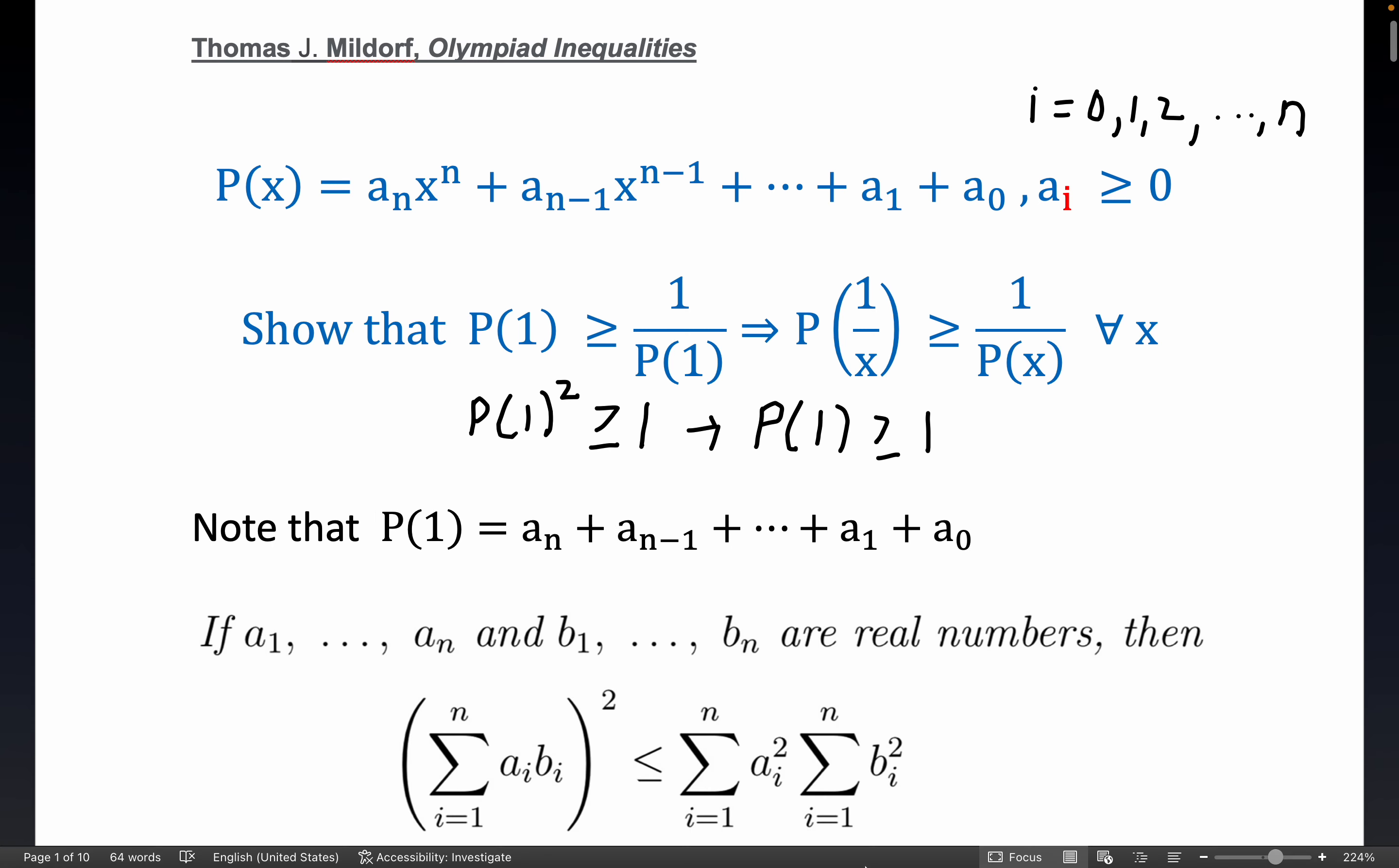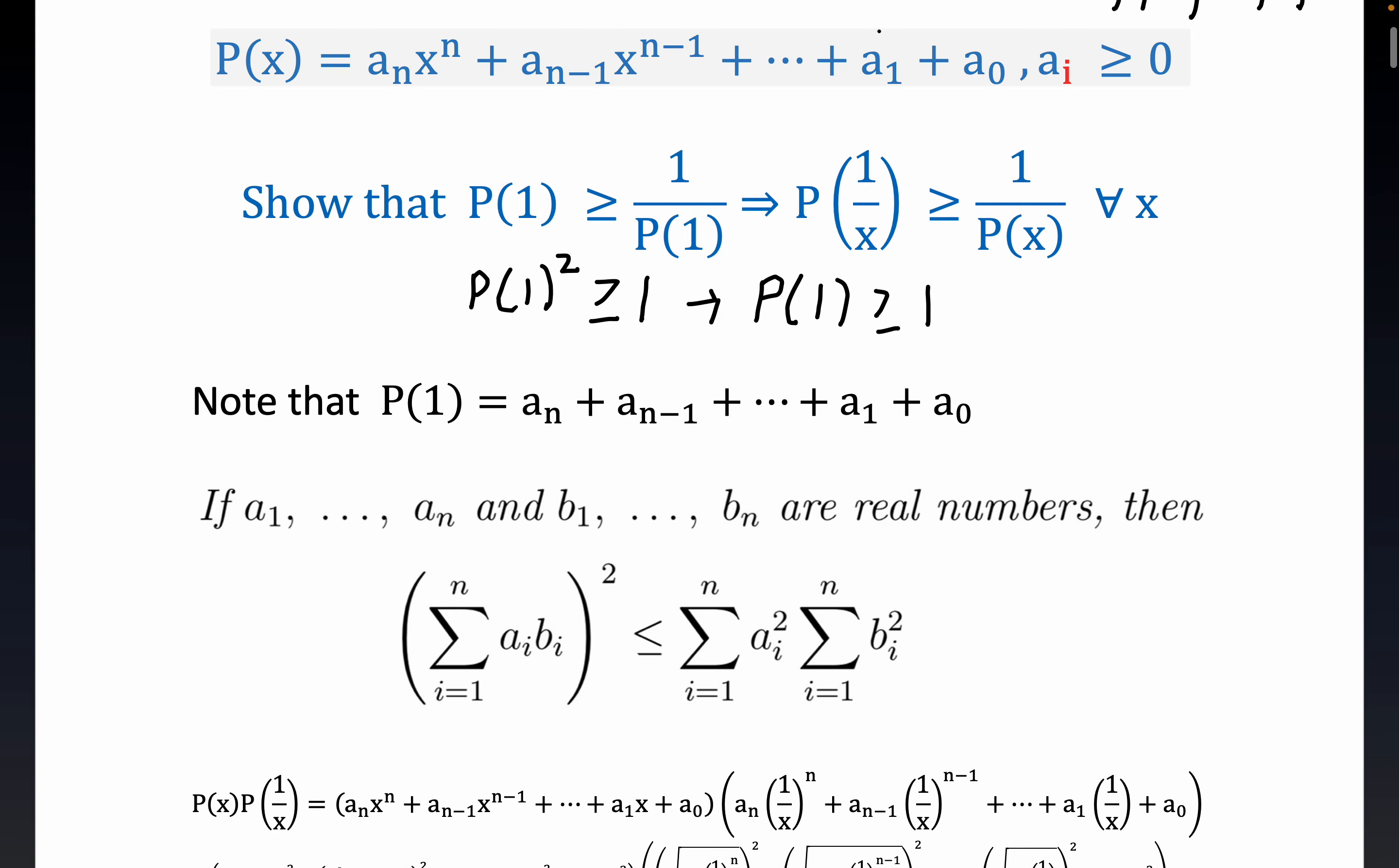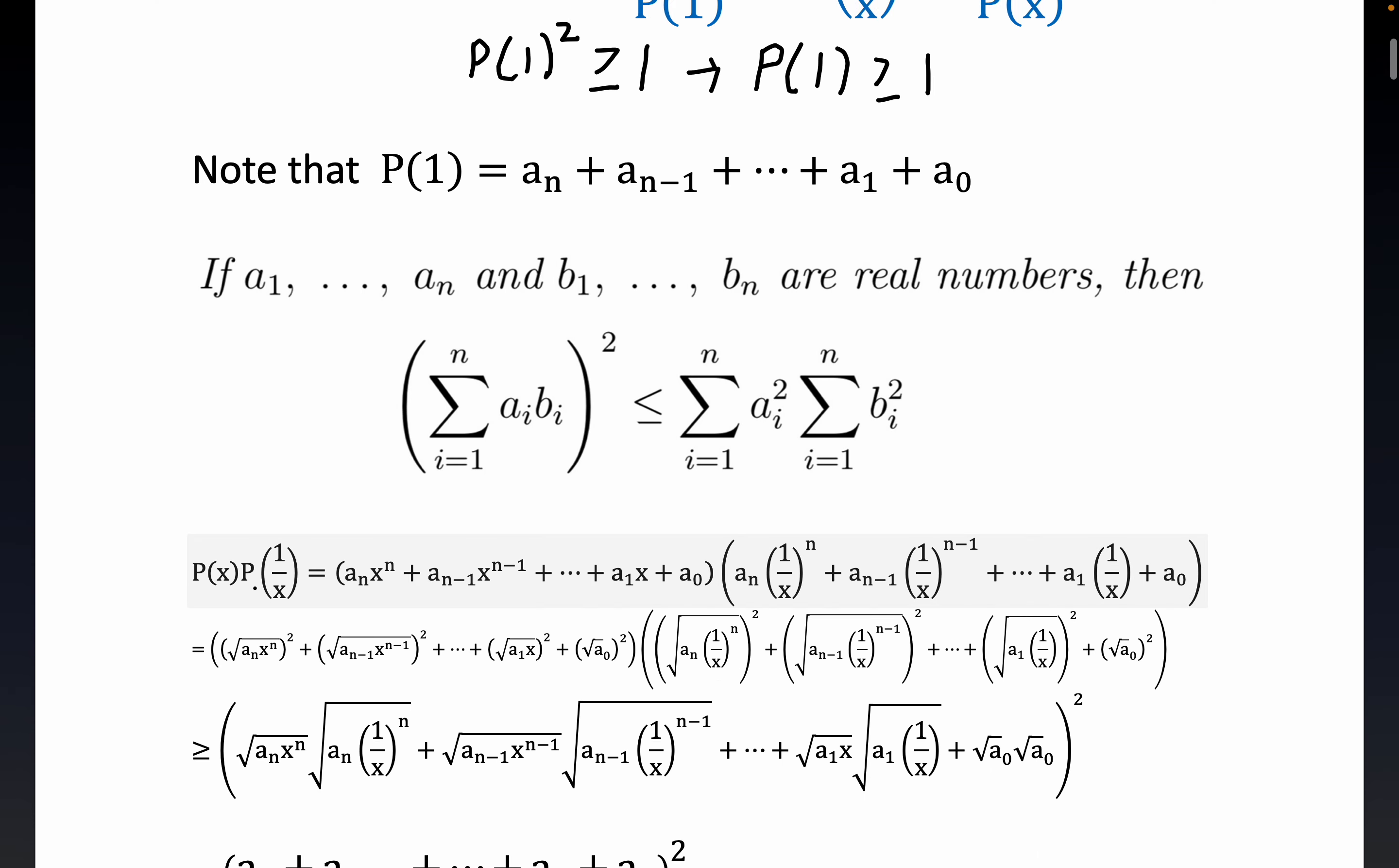Now we're going to use the Cauchy-Schwartz, like I mentioned, and think of the a sub i and the b sub i connected to these coefficients. So the first thing we're going to do, since we have an inequality of this form right here, P at 1 over x greater than or equal to 1 over P of x, that's what we're trying to prove for all x, all real x. We'll write that product down, P of x times P of 1 over x. I try to be careful with the notation right here. This is P of x times P of 1 over x, this statement right here.